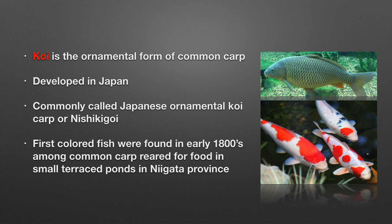First, a few words about the history of koi. What is koi? Koi is an ornamental form of common carp. Common carp — maybe you know it is widespread in the United States — but actually common carp is an invasive species. It's very common in Europe and in Asia, but to North America and other parts of the world, it was delivered intentionally.